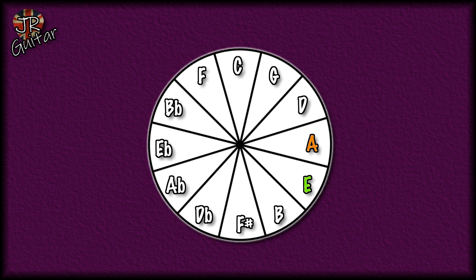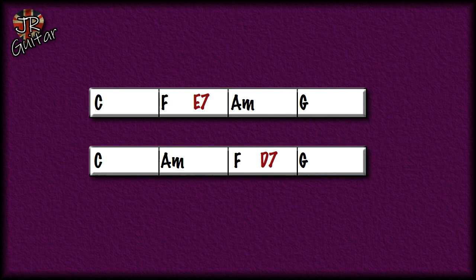E is the fifth of A, and A is the root note of the chord we want to go to. Then thinking about a secondary dominant chord to go to G: the fifth of G is D. So before the G chord we place a D seventh — that is another secondary dominant chord. Here's the chord sequence again with the two secondary dominant chords shown in red. Let's have a listen to what effect that has.